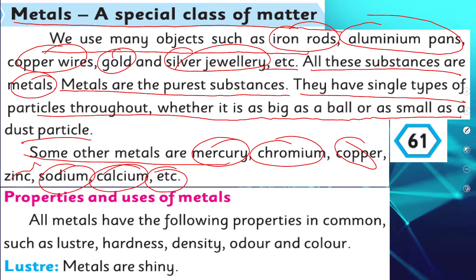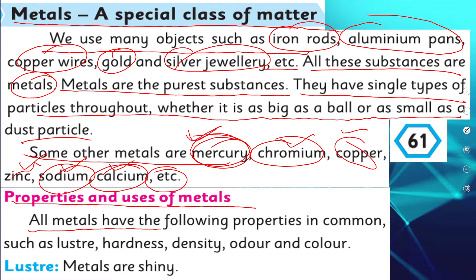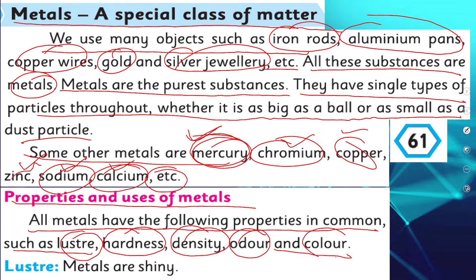Generally we name silver, gold, iron, and aluminium as metals, but chromium, copper, zinc, sodium, and calcium are also metals. Mercury is the liquid form of metal — it is the only metal that exists in liquid state. Properties and uses of metals: all metals have the following properties in common — luster, hardness, density, odor, and color. Metals are shiny.